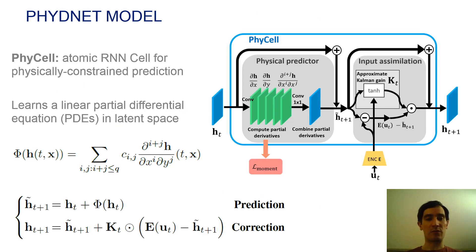The physical cell is called PhyCell. It is an atomic cell for building physically-constrained predictions. PhyCell learns advection-diffusion dynamics in latent space with differential operators approximated with convolutions.